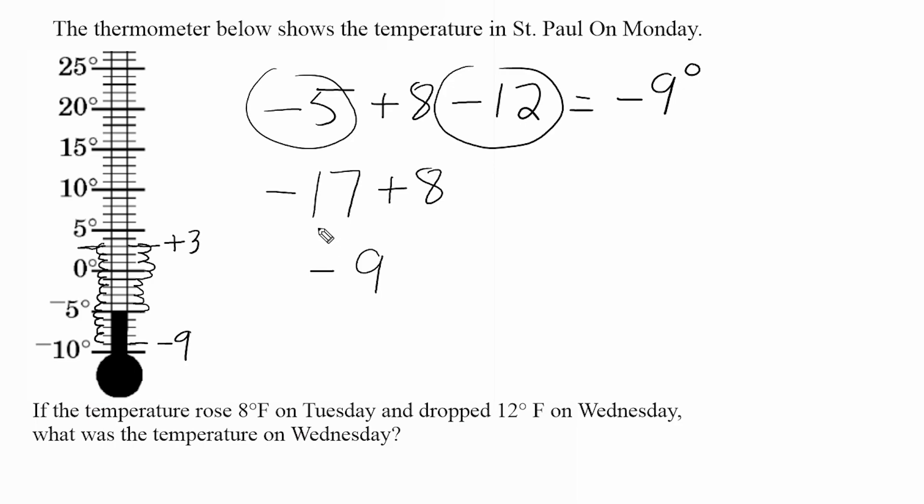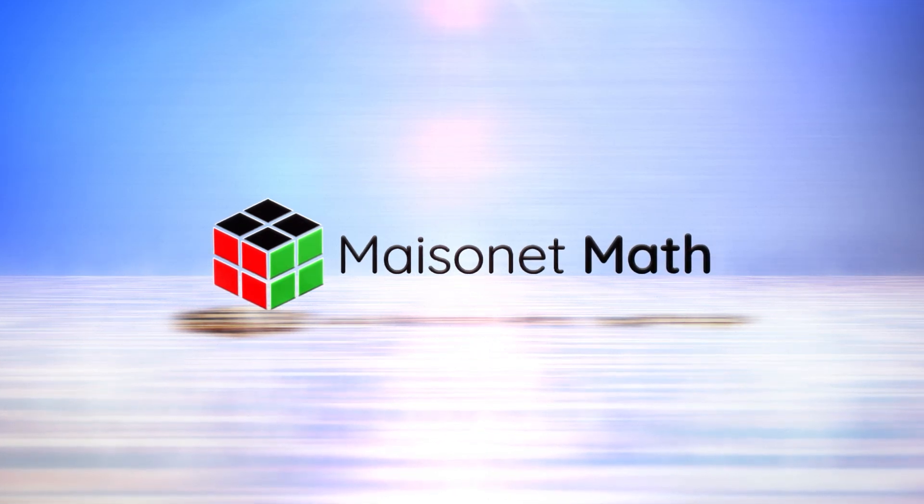So when you have opposite signs, sometimes your answers are going to be negative and sometimes positive. In this case, we have a negative result. So once again, we can see that the temperature on Wednesday in St. Paul is nine degrees below zero.